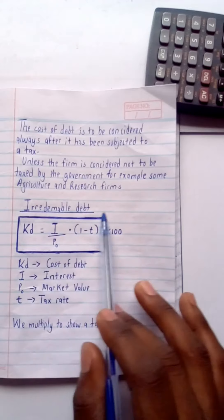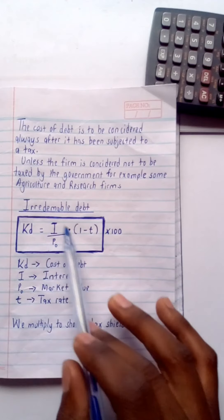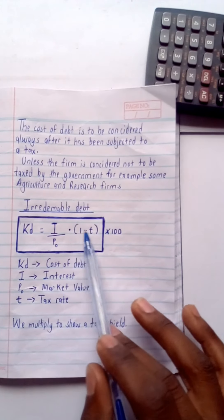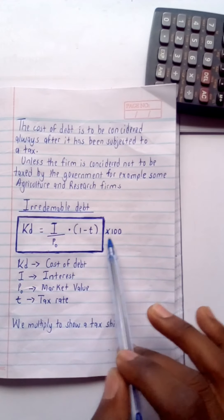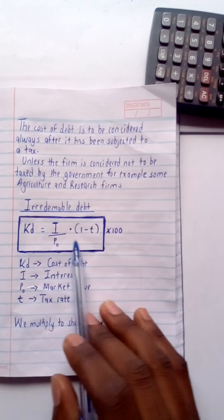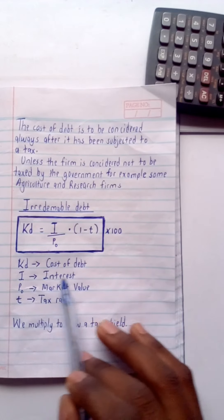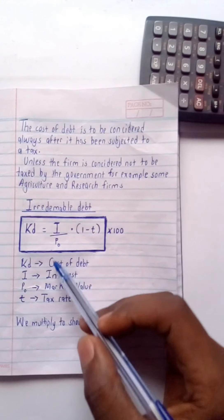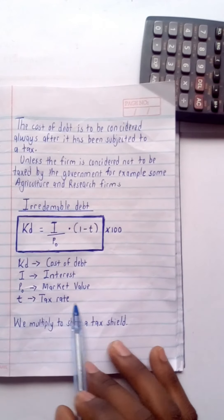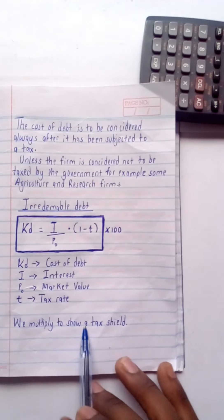For irredeemable debt, the formula is: Kd = I ÷ P₀ × (1 − t), then multiply by 100 to get a percentage. Where: Kd is the cost of debt, I is the interest, P₀ is the market value, and t is the tax rate. We multiply by (1 − t) to show the tax shield.